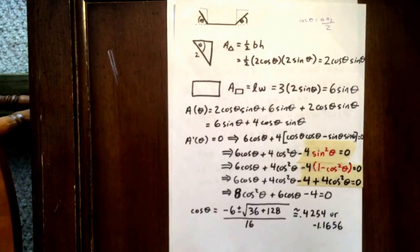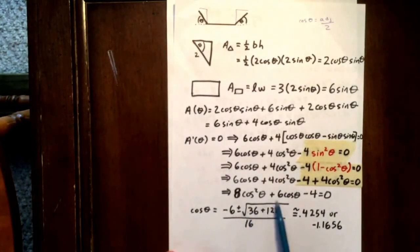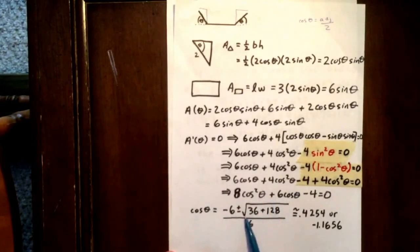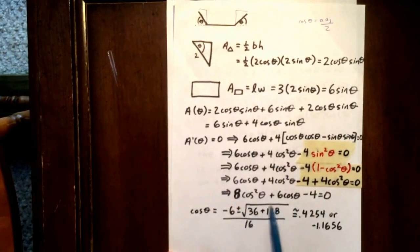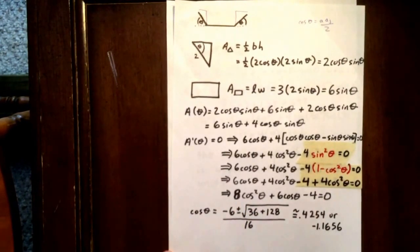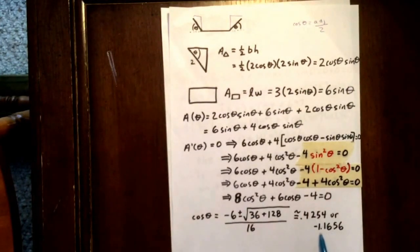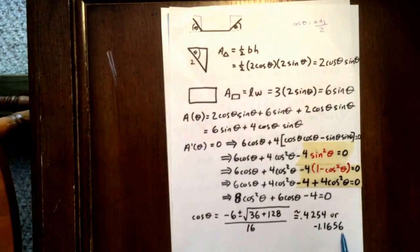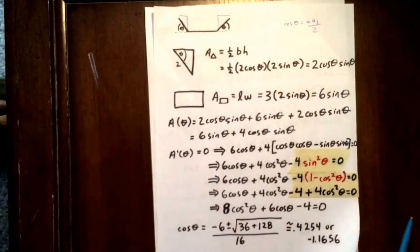We can now use the quadratic formula. The cosine of theta is negative 6 plus or minus the square root of 6 squared minus 4 times 8 times negative 4, plus 128, all over 16. We get two different values: positive 0.4254 or negative 1.1656 for cos theta. We know that negative 1.1656 is an extraneous solution, but 0.4254 looks promising.